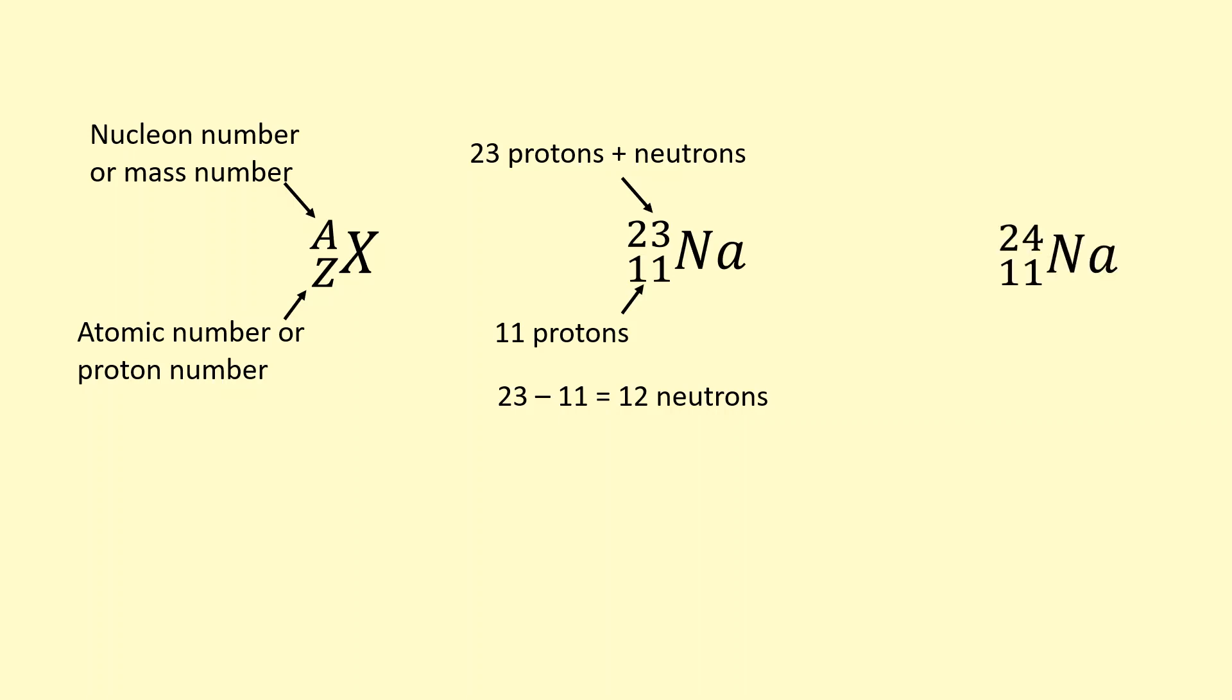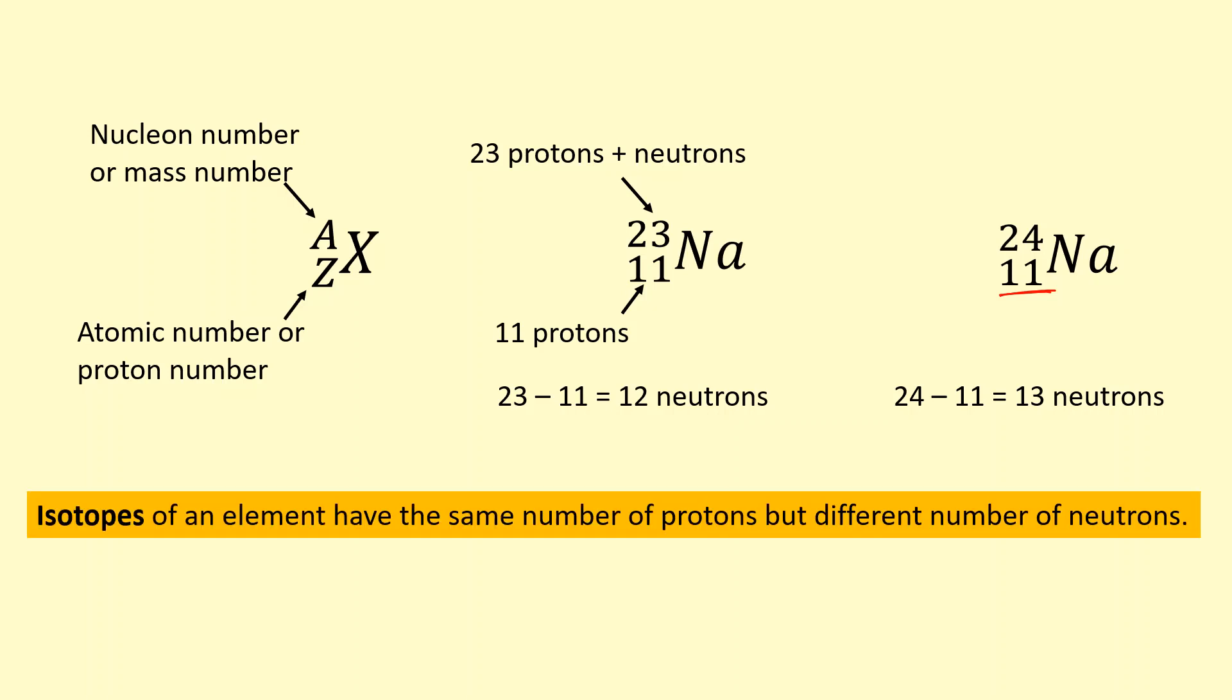Here's another sodium, but this is sodium-24. The reason why this is still sodium is because it's still got 11 protons. So all sodiums will have 11 protons. That's what makes it sodium. The 24 means that there are 24 protons plus neutrons. So if we do the math, there are 13 neutrons. So this is different from the sodium-23 because it's got one extra neutron.